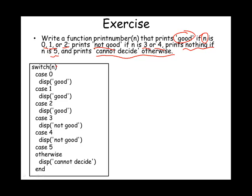You can see there is redundancy when performing identical actions for different cases. To simplify, you can combine cases by listing their values separated by commas inside curly braces. So we check: if the value is 0, 1, or 2, display 'good'; if it is 3 or 5, nothing is printed; otherwise display 'cannot decide'.